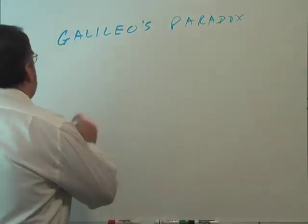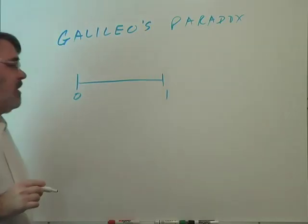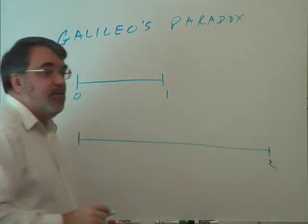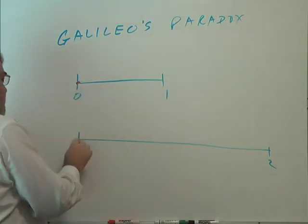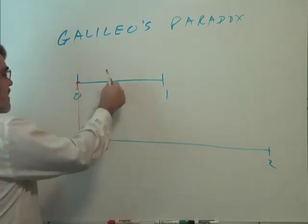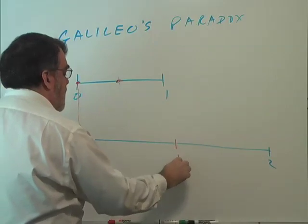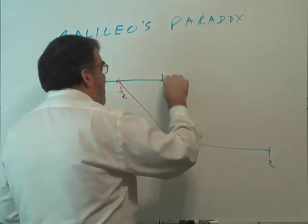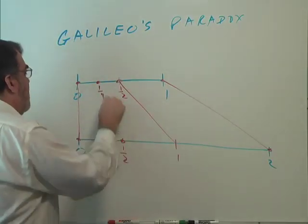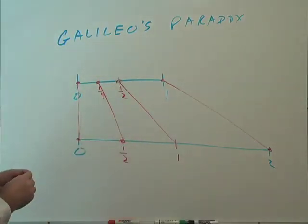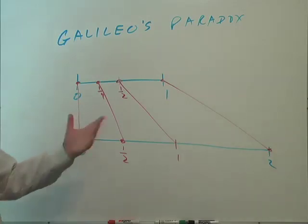Alright. So suppose that we have this segment going from zero to one, and we have this segment going from zero to two. Alright. So what we propose to do is to take every number on this number line and pair it up with a number down here. And so zero would pair up with zero. One-half would pair up with one. One pairs up with two.